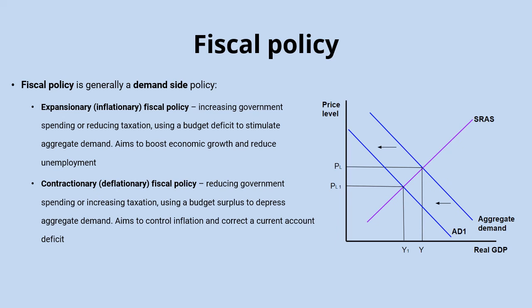Contractionary or deflationary fiscal policy is about reducing government spending or increasing taxation, pushing the budget position more towards a surplus and reducing aggregate demand. The aggregate demand curve shifts to the left, and the drop in price level helps keep inflation under control. Also, lower expenditure from falling aggregate demand means less spending on imports, so these contractionary policies can also be used to correct a current account deficit. The trade-off is falling real GDP and rising unemployment, as shown on the diagram.